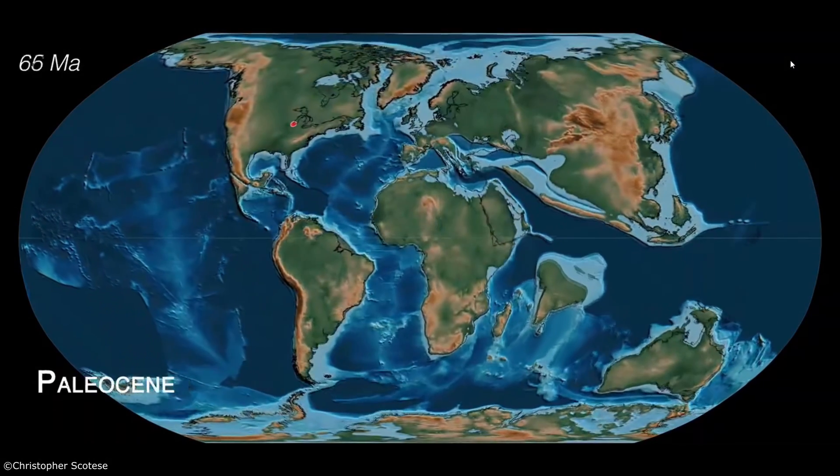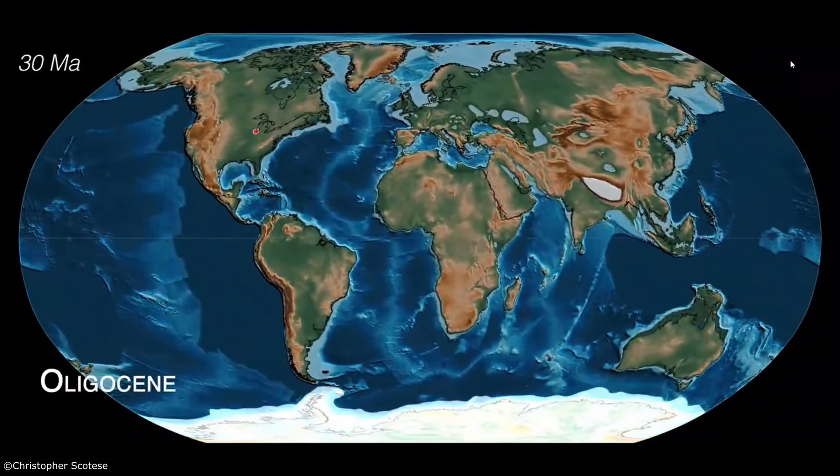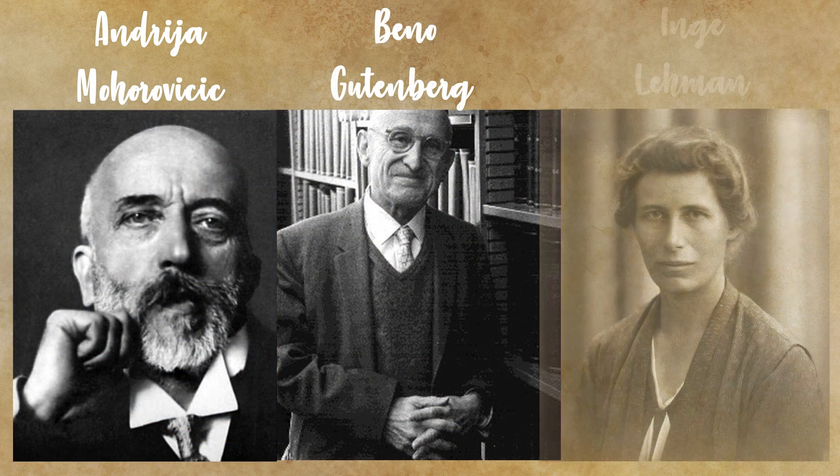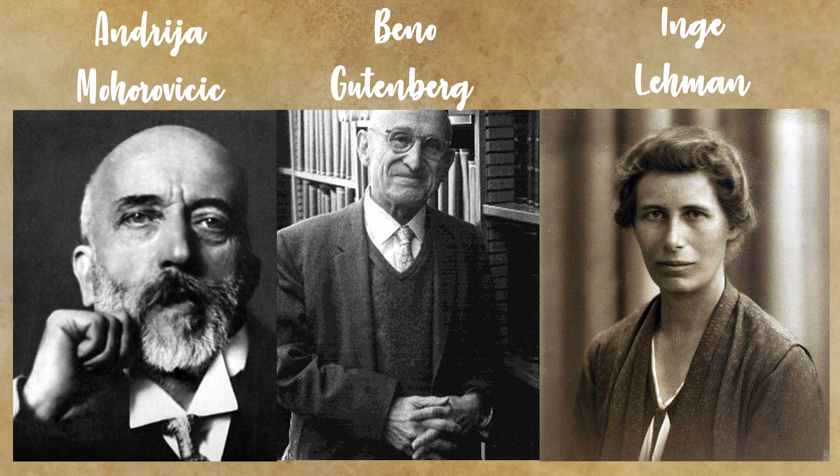However, at the same time, other geologists such as Andrija Mohorovičić, Beno Gutenberg, or Inge Lehmann were discovering the internal structure of the Earth, a sphere of molten magma.